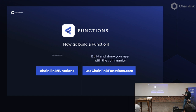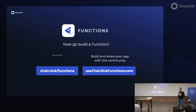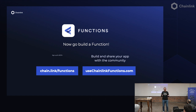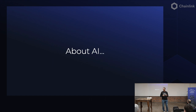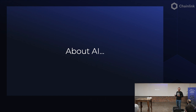You can sign up for the beta. You can also go to usechainlinkfunctions.com to see incredible ideas already submitted and submit yours. I started playing with Chainlink Functions and I'm a bit of a big fan of AI. So I thought, what could we do with Chainlink Functions and AI? I decided to hit up a friend who's an AI lead at Google, Lawrence Moroni. Let's hear it from him.